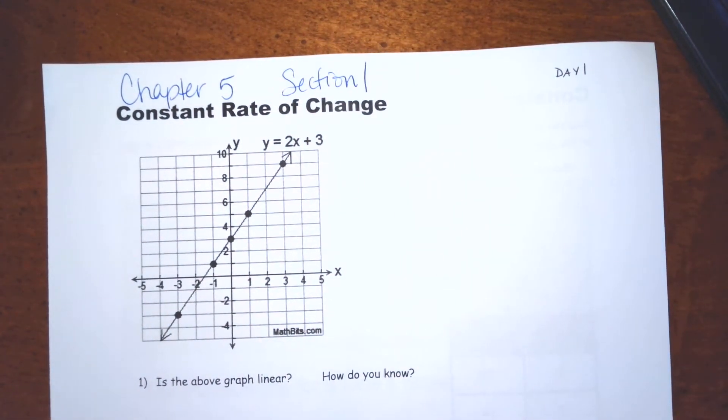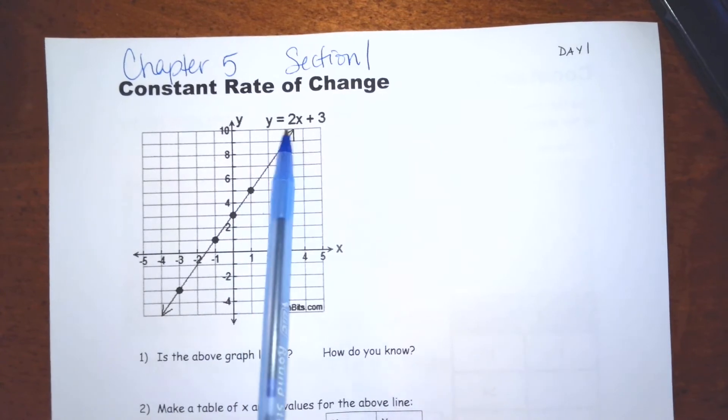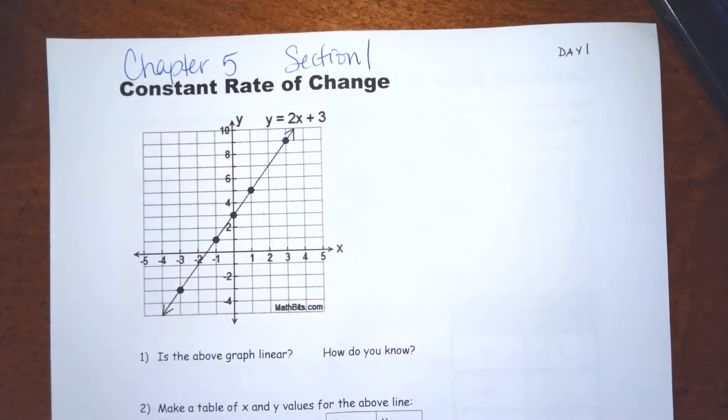Okay, chapter 5, section 1, we're going to talk about the constant rate of change. Well, as you can see, we have a line graphed here. It says y equals 2x plus 3.